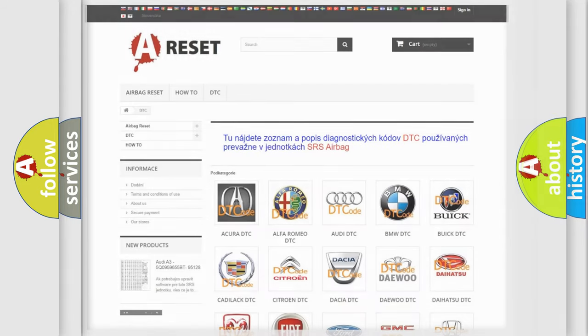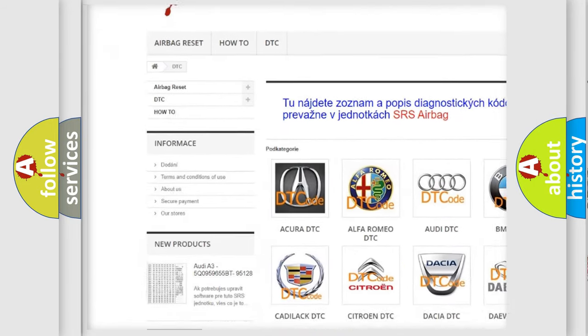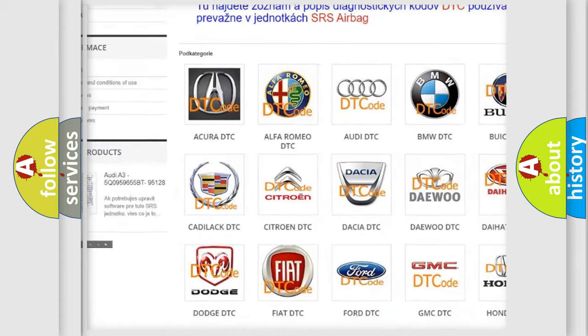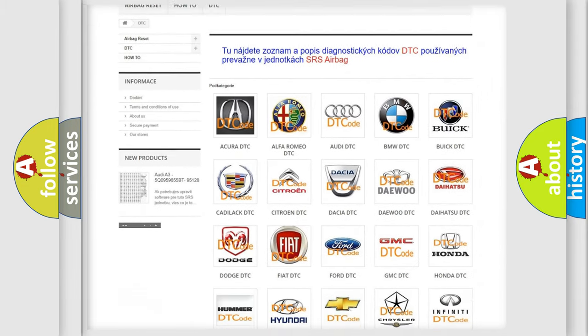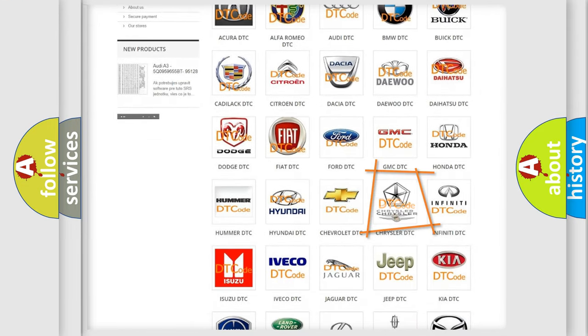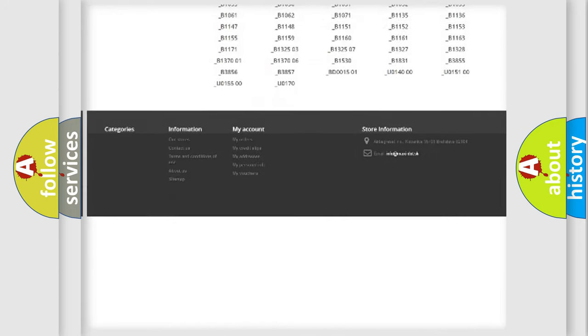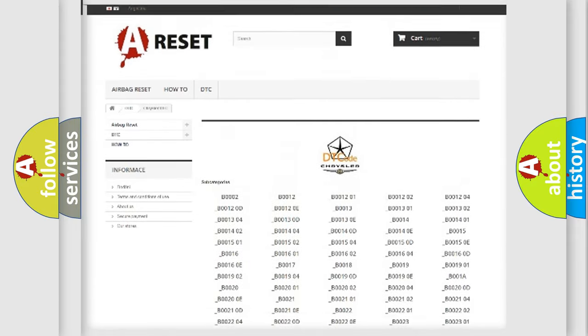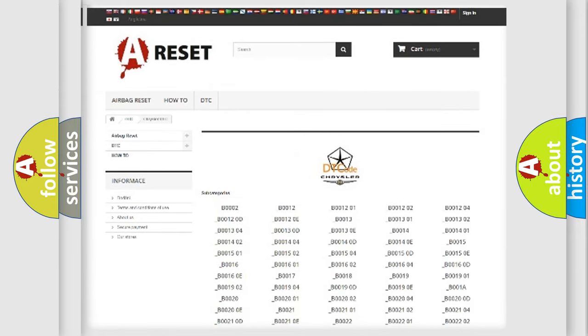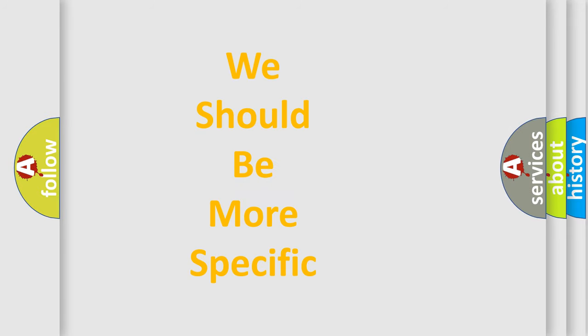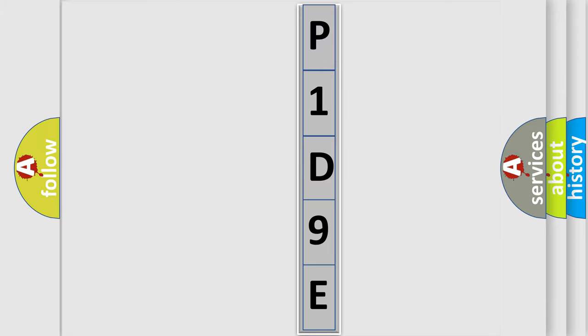Our website airbagreset.sk produces useful videos for you. You do not have to go through the OBD2 protocol anymore to know how to troubleshoot any car breakdown. You will find all the diagnostic codes that can be diagnosed in Chrysler vehicles, and many other useful things. The following demonstration will help you look into the world of software for car control units.